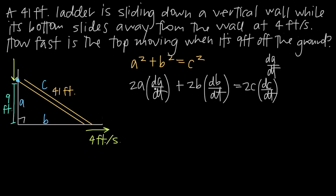We need to solve for dA/dt, getting it alone on one side of the equation. First, we know that at the point in time we're interested in, a is 9 feet — because we want to know how fast the top is moving when it's 9 feet off the ground. So we plug 9 in for a: we get 2 times 9, which gives us 18 times dA/dt.